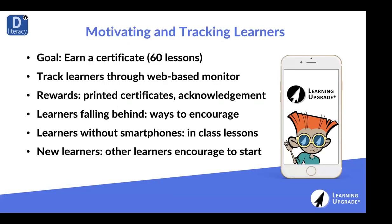Our goal for learners is to earn a certificate by completing an entire course. To earn a certificate, they need to complete all lessons including the final challenge above 75% for bronze, 90–94% for silver, and 95–100% for gold. As an instructor, you want to make sure you're tracking learners. Our data shows that usually about 20–30% of learners, without ever interacting with them, will just take off, cruise through the course, and earn certificates. Those we don't have to worry about.